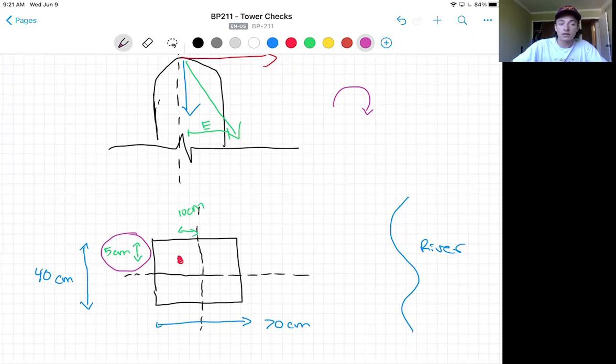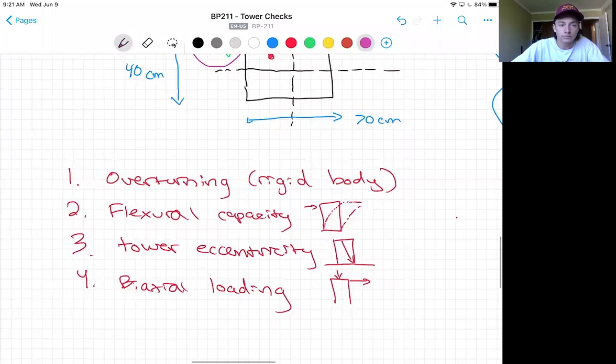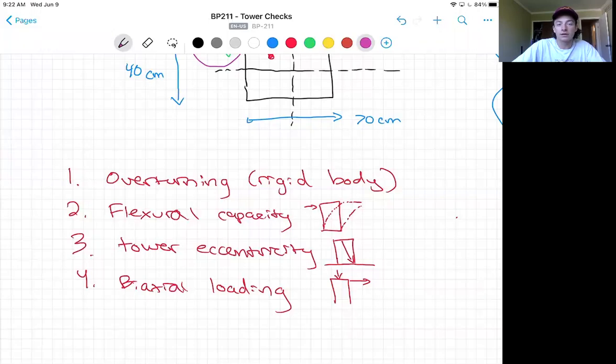So to summarize, we have four total checks of the tower: overturning, flexural capacity as a cantilever beam, tower eccentricity, and biaxial loading, checking the tower as a column.